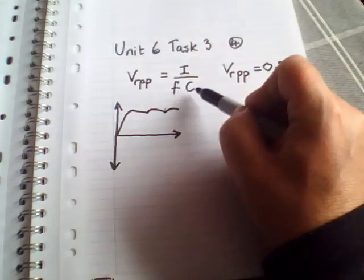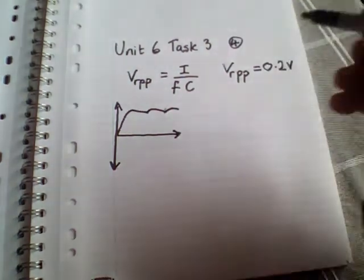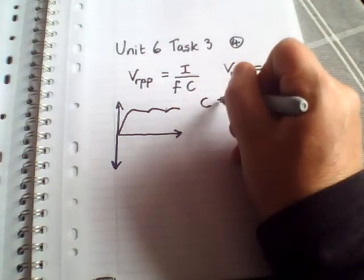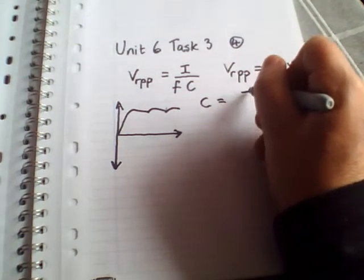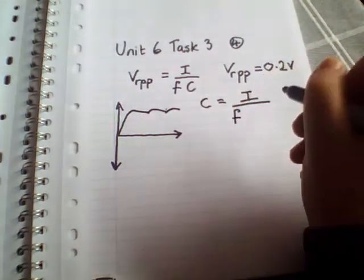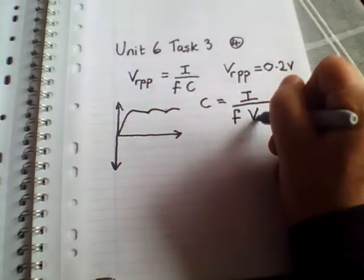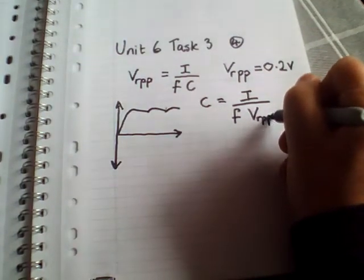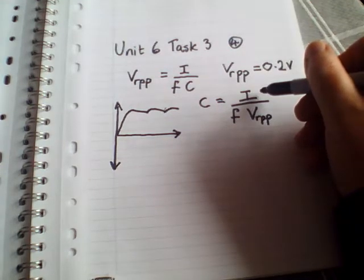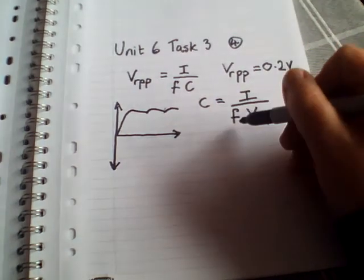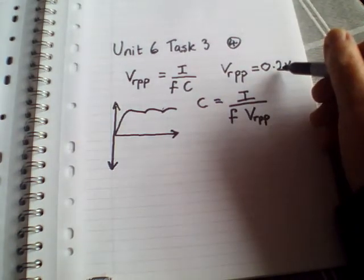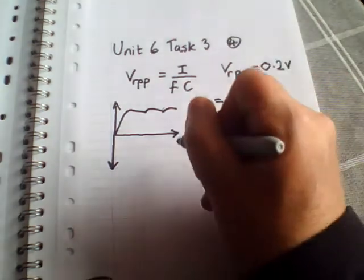So if we rearrange this formula for C, C will equal I over the frequency times the ripple peak-to-peak voltage. So we know what all these numbers are: 500 milliamps or 0.5 amps, frequency of 100, and the ripple voltage in this example 0.2 volts.